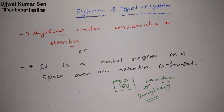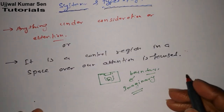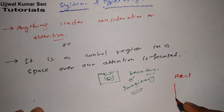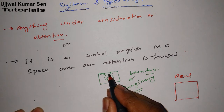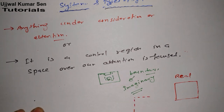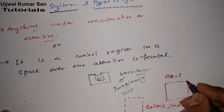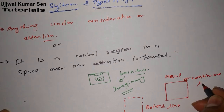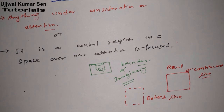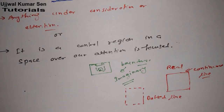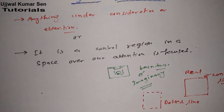We need to know how to represent real boundary and imaginary boundary. A real boundary is denoted by a continuous line. An imaginary boundary is always denoted by a dotted line. This convention comes from engineering drawing — if you are already in engineering, you understand what exactly is being described here. Now let's move on to types of system.